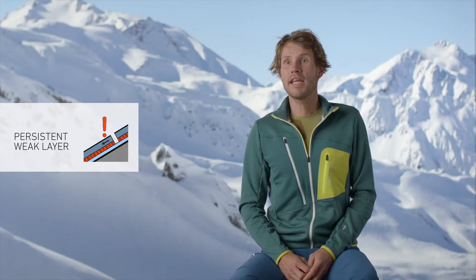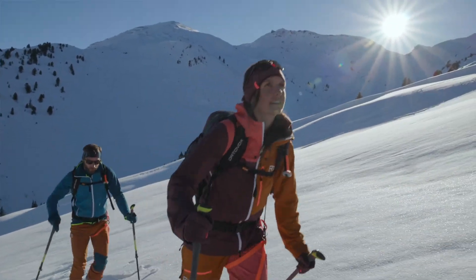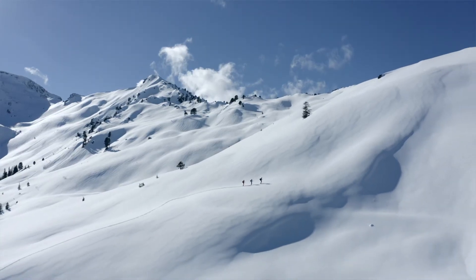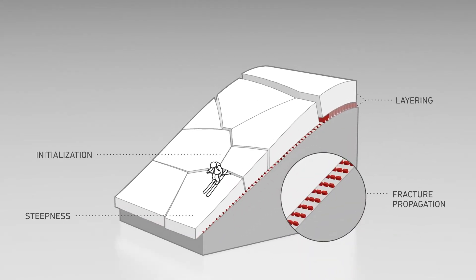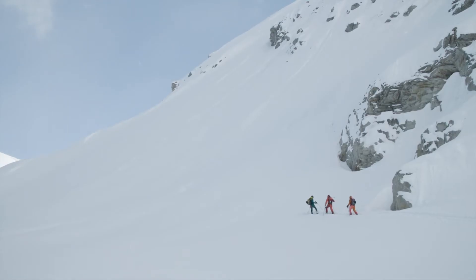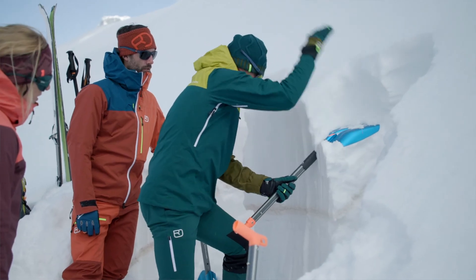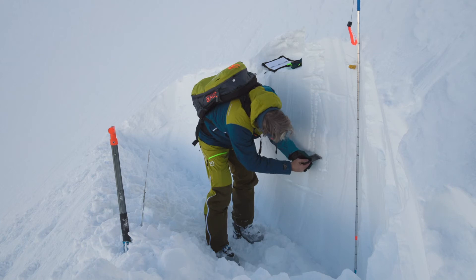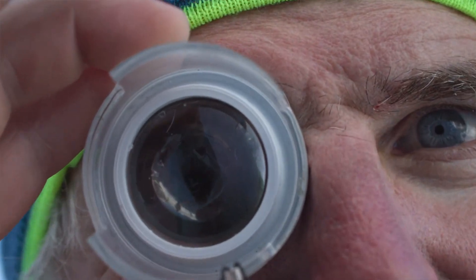The persistent weak layer problem is more of a hidden problem. It can't really be linked to the weather; often this situation occurs on days with calm weather. Perhaps it has already been sunny for a few days. The problem is a weak layer located within the snowpack that is susceptible to stress — it can't be explained by wind, temperature changes, or new snow. One of the typical weak layers in the European Alps is faceted crystals, present in around three to four of all avalanche accidents. Other weak layers include buried surface hoar and depth hoar.